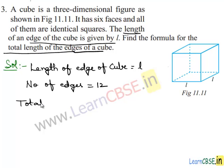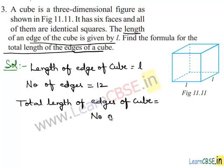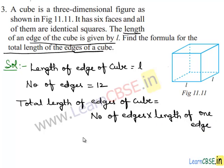So the total length of the edges of a cube is equal to number of edges into length of one edge. The number of edges is 12 and the length of one edge is L, which is equal to 12L. Therefore, the total length of the edges of a cube is equal to 12L.